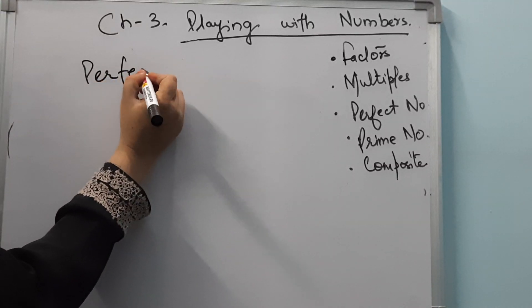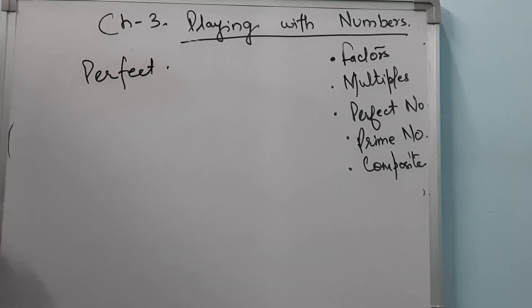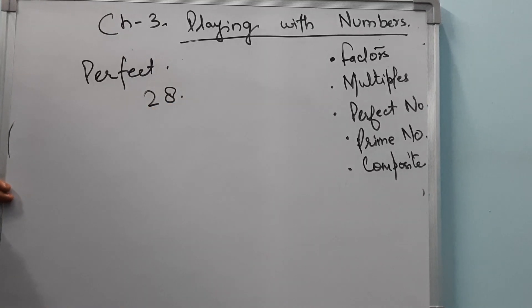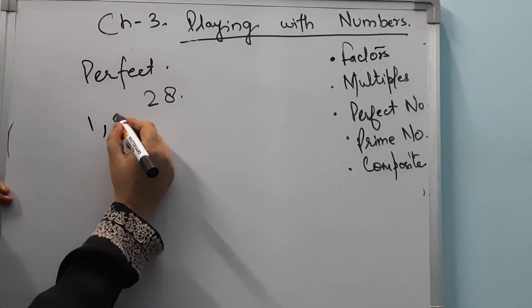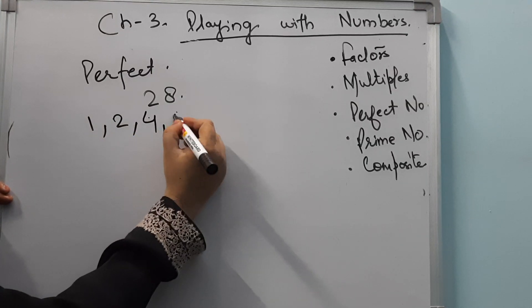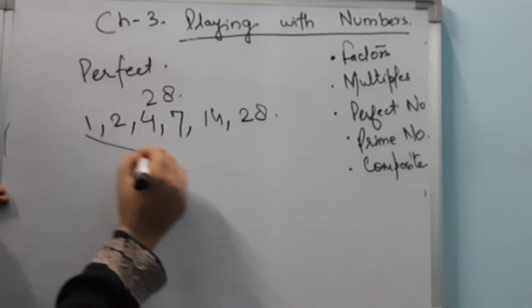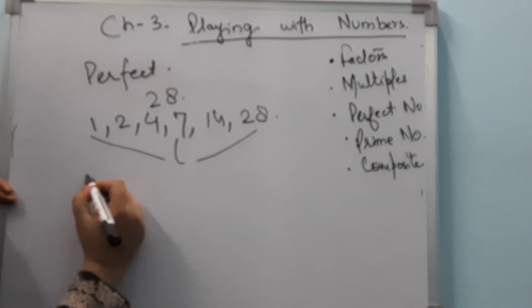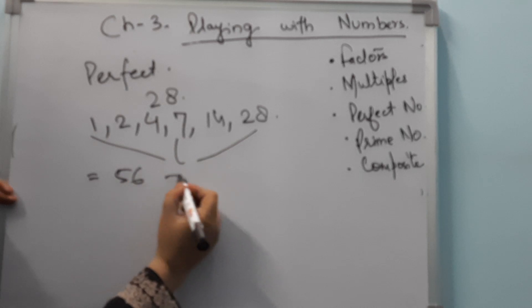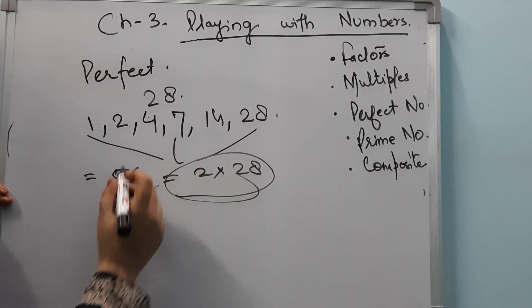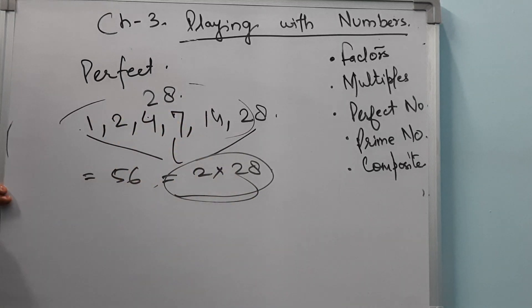Now we will discuss perfect numbers. What is a perfect number? Suppose I take the number 28. Its factors are 1, 2, 4, 7, 14, and 28. If I add all these numbers, the sum is 56, which is twice the number. So 28 is a perfect number when the sum of all factors is twice the number.